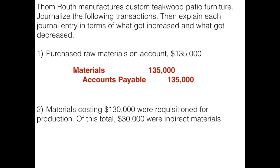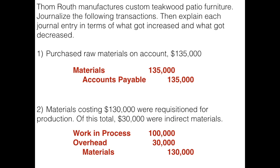We know from our cost flow map that when materials are used they come out of our materials account with a credit — so our materials balance is going down. The direct materials go directly into work in process as a debit, and the indirect materials are debited to overhead. If you look back at the map from the prior video you can see exactly what's happening here.